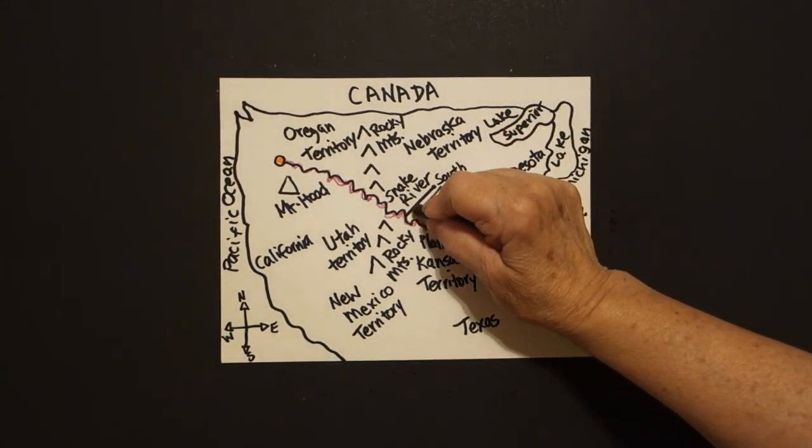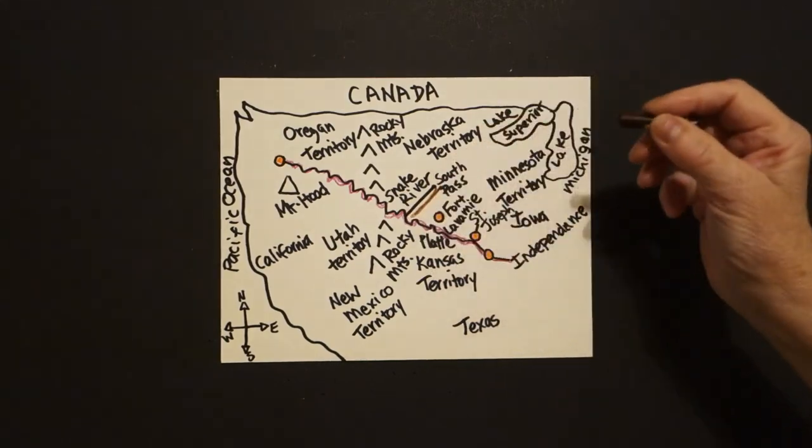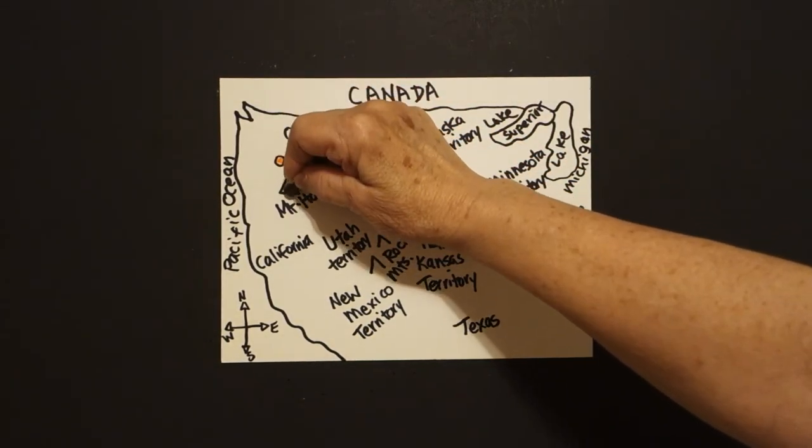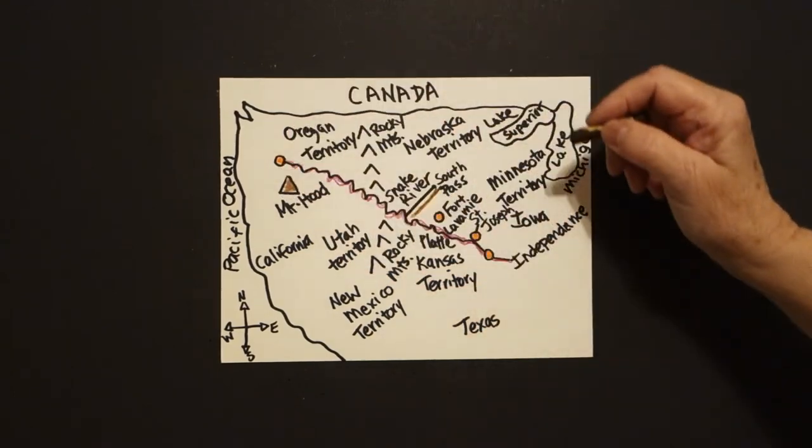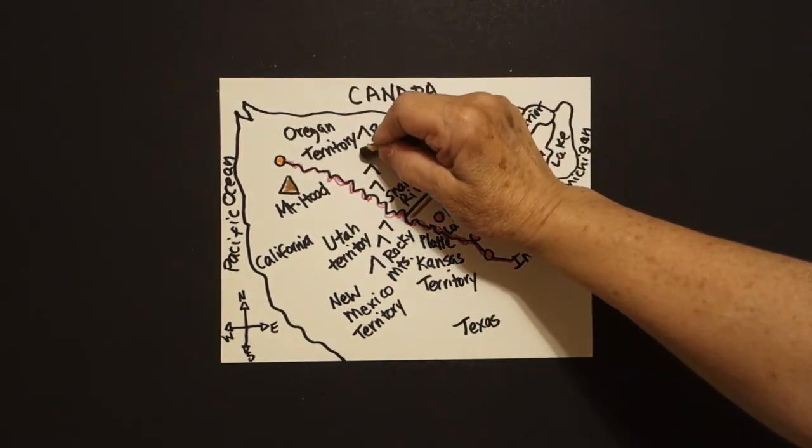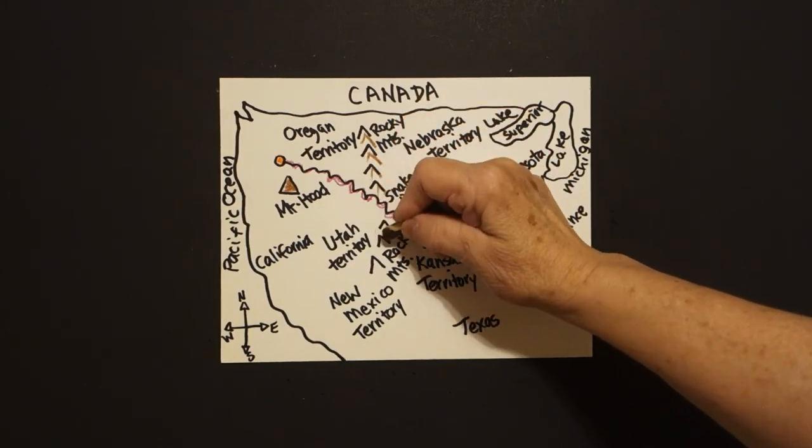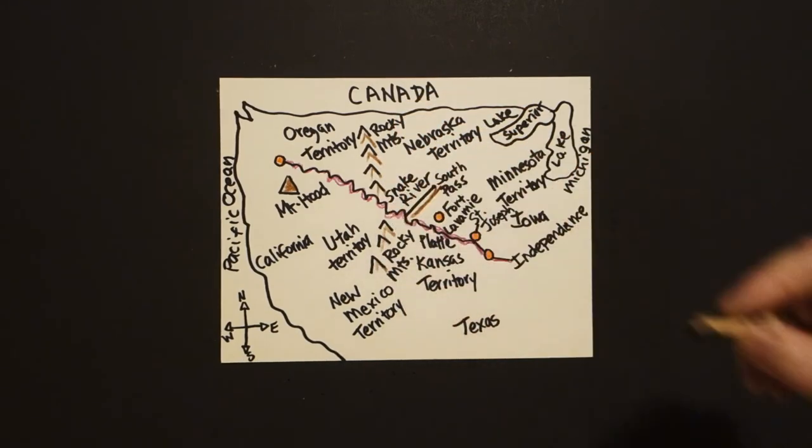So, with brown, the South Pass, it's part of Wyoming. Mount Hood is over here. This is part of Oregon. And the Rocky Mountains. Just put some brown. You don't want to put too much color because we've got so much information going on here.